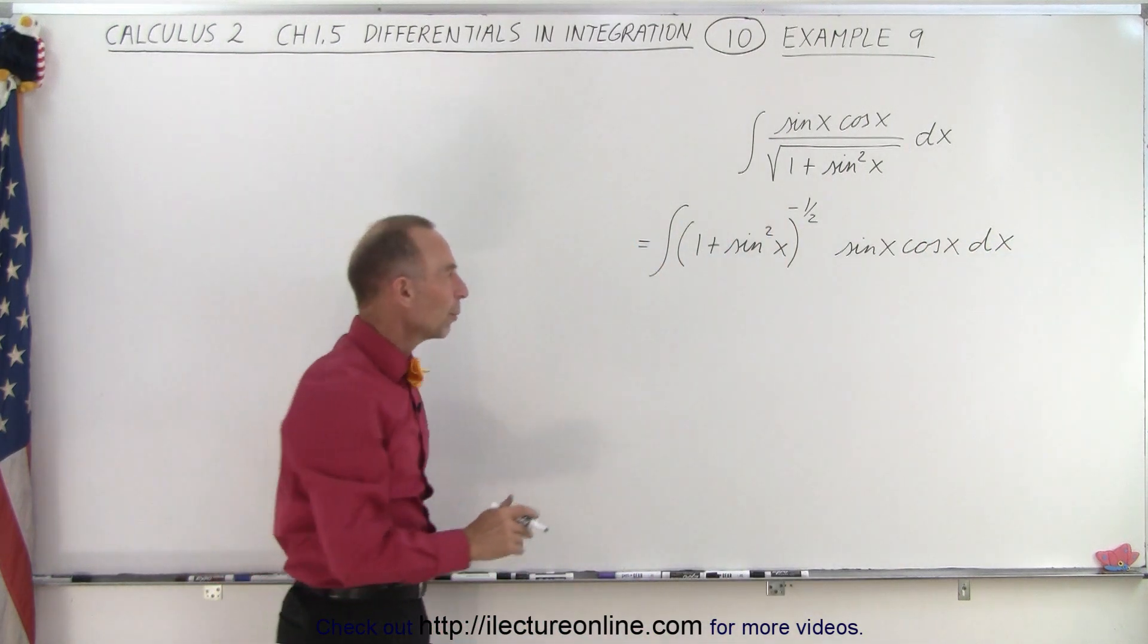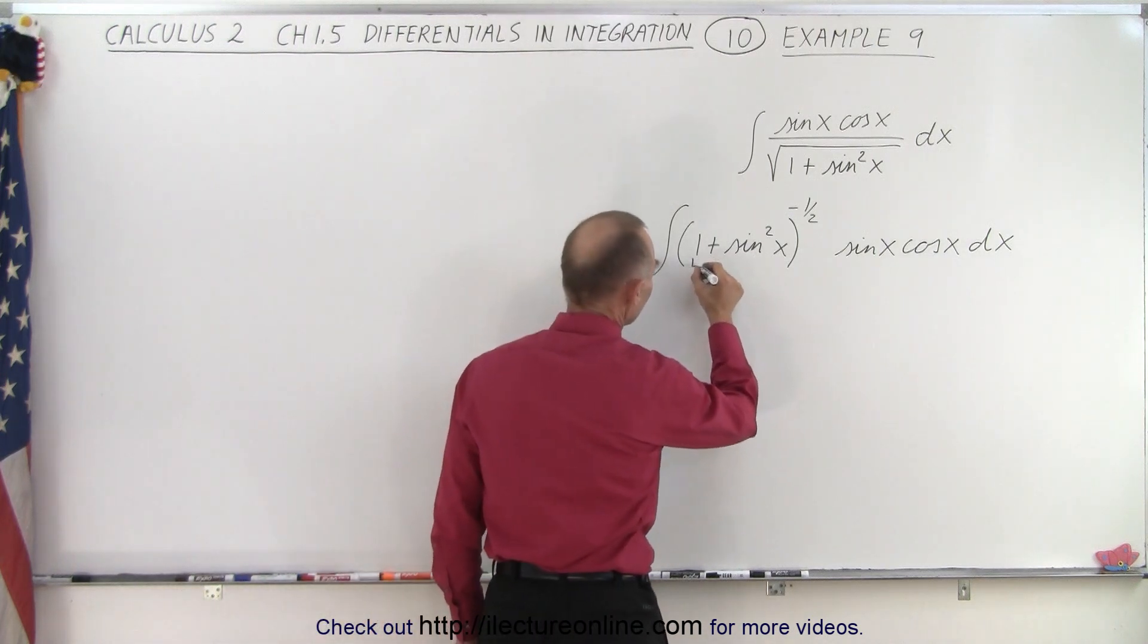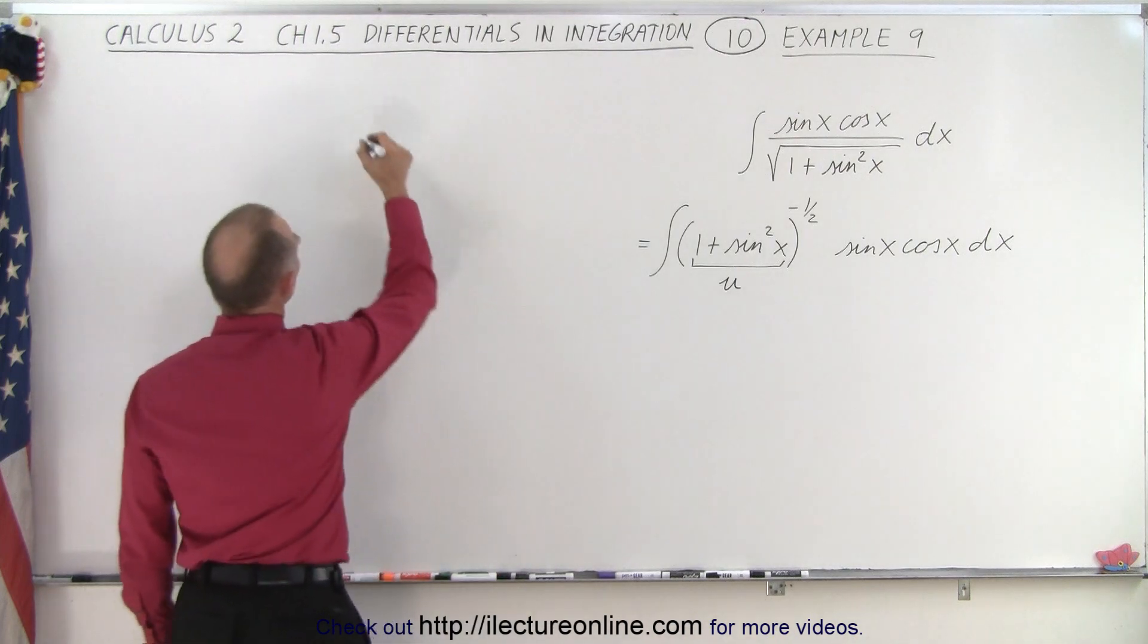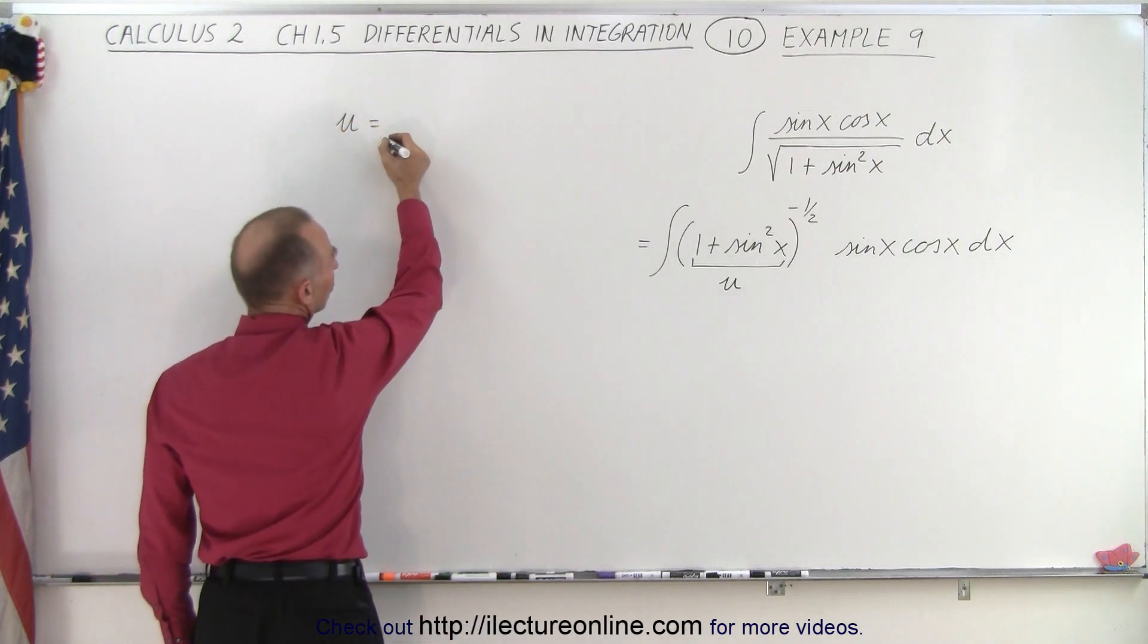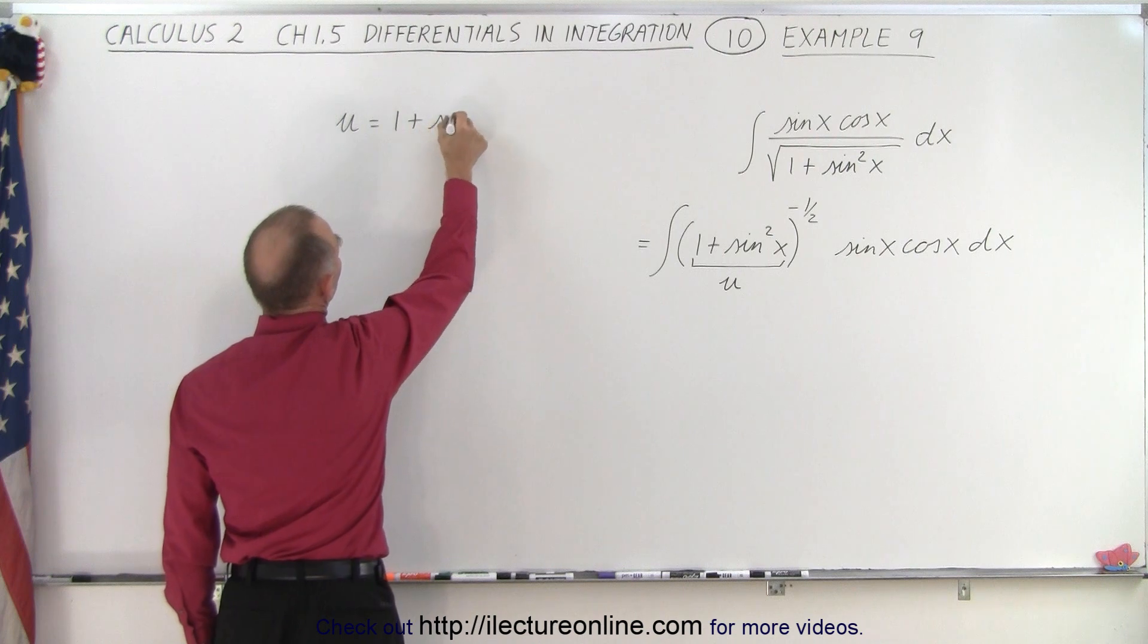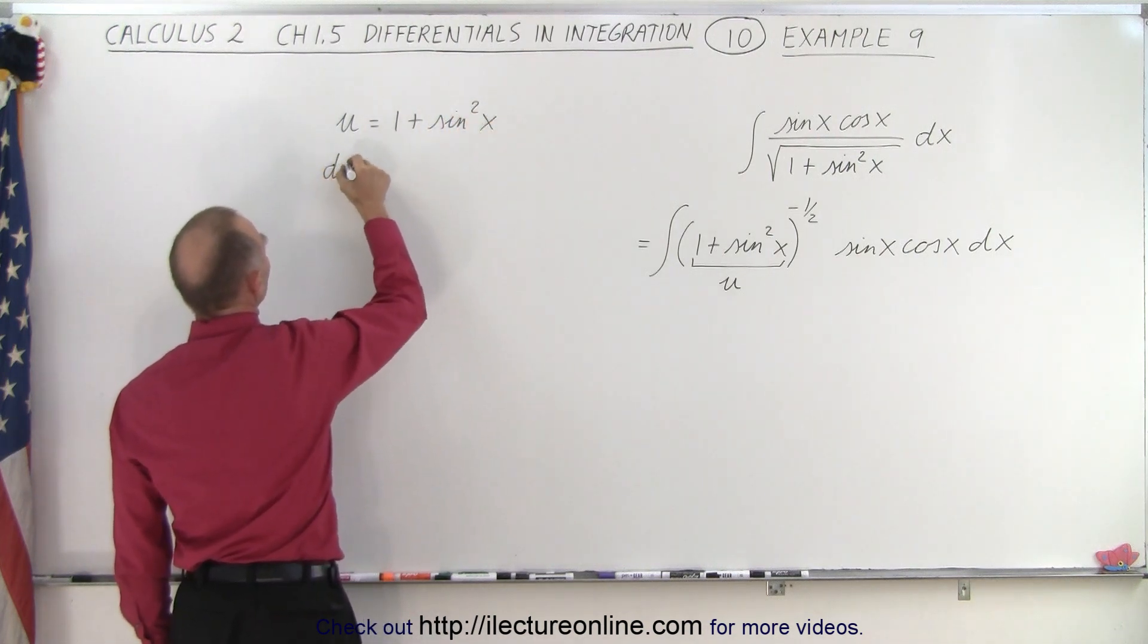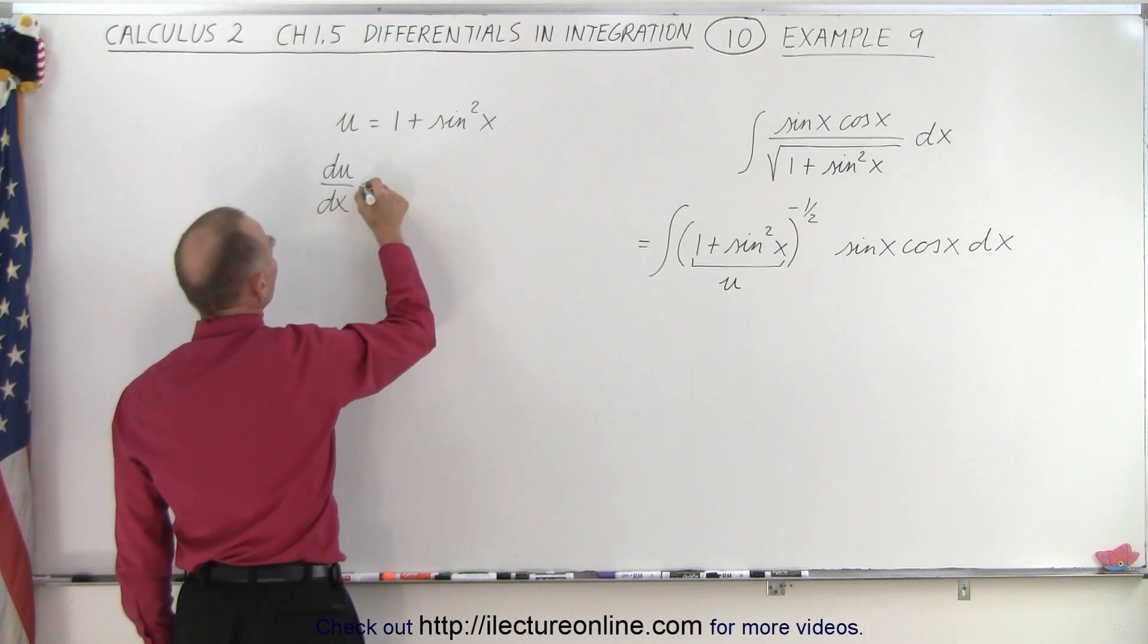And once it's in this form, what you can then do is say, what's inside the parentheses, I'm going to let that equal u. So u is equal to 1 plus the sine square of x, and therefore my du dx is equal to...